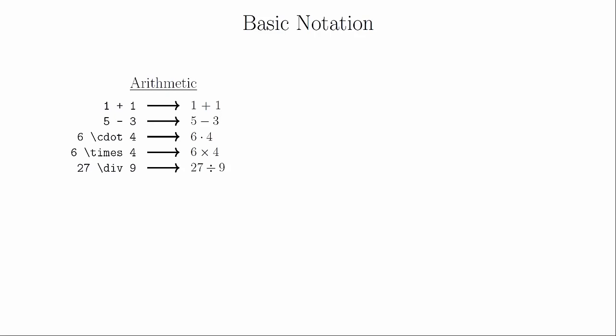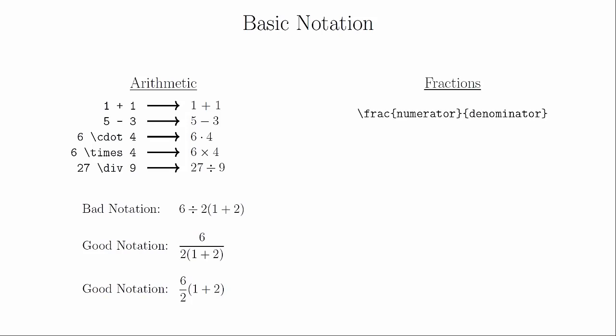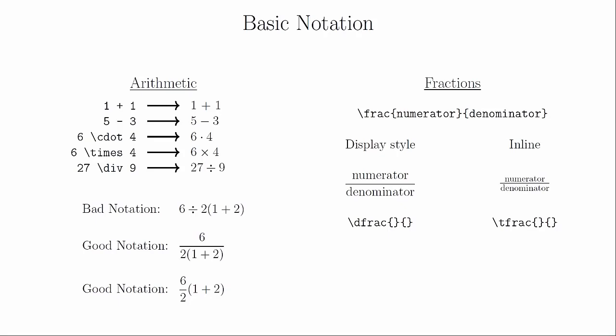We will now look at mathematical notation itself. For addition and subtraction, you simply use the standard plus and minus keys on the keyboard. For multiplication, you do not want to use the asterisk. Instead, you will use either \cdot to make a multiplication dot, or \times if you want the big X notation. The division sign can be created using \div, but you should be cautious because it can lead to unfortunate and misleading notation — it is usually better to use fractions. To create a fraction in math mode, use \frac, where the contents of the first brackets go in the numerator and the contents of the second brackets in the denominator.